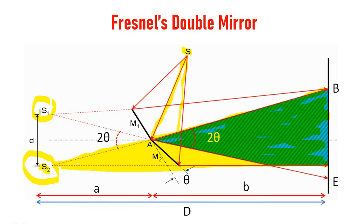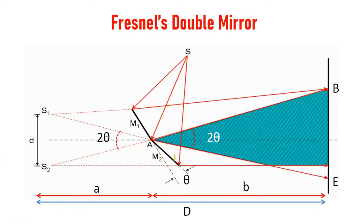The distance between S1 and S2 is denoted by D. The distance between the source and the screen is represented by capital D. Distance from the point R to the screen is represented by small b, and distance from the source to A is represented by small a. So capital D equals a plus b.